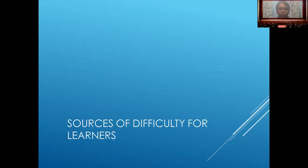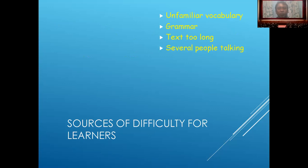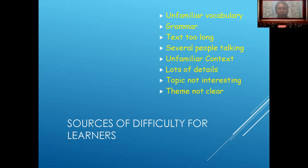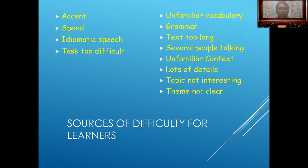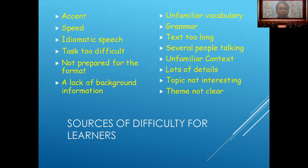Sources of difficulty for learners include: unfamiliar vocabulary, grammar, text too long, several people talking, unfamiliar context, loss of details, topic not interesting, theme not clear, accent, speed, idiomatic speech, text too difficult, not prepared for the format, and lack of background information.